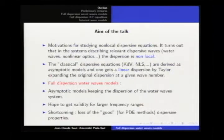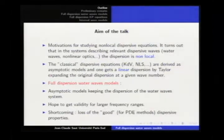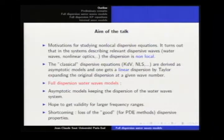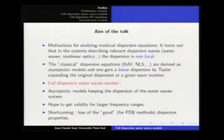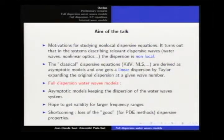The full dispersion water wave models are asymptotic models where we somehow keep the dispersion of the water waves — by definition, the dispersion will be non-local. The aim is to get validity of the model for larger frequency ranges. Of course, there is a big shortcoming for PDE people: you lose essentially all the good dispersive properties, say of KDV, which are artificial. The dispersive properties of KDV are a bit artificial if you compare them with those of the water waves. This is why there are much fewer results on these full dispersion models than for KDV.